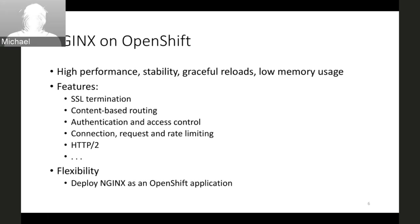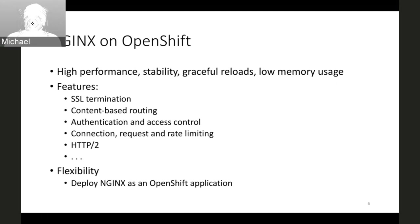Why is NGINX relevant for load balancing on OpenShift? First, it is a very high-performance load balancer with low memory usage. It's been around for more than a decade, so it is stable and very well tested. Support for graceful reloads allows you to reconfigure NGINX very often, which is crucial for dynamic environments like Kubernetes or OpenShift. It has many advanced features: SSL termination, advanced content-based routing, authentication and access control, connection and request rate limiting to protect against DDoS attacks, support for HTTP/2, and many other features relevant for edge load balancing.